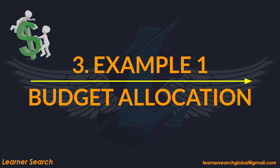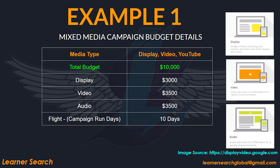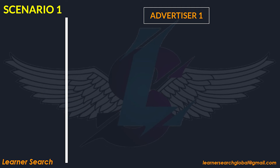Let's take example 1. Assume the following information with a mix of media types to construct a campaign in DV360. Display, video, and YouTube are the media types in which you want to spend the budget. The campaign total budget is $10,000. According to the media plan, the budget should be divided as follows: $3,000 for display, $3,500 for video, and $3,500 for audio. For this example, let's consider the first scenario.